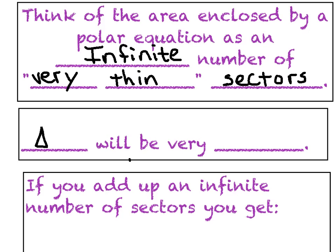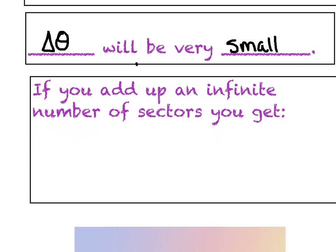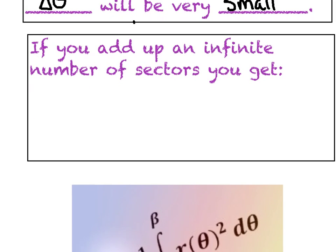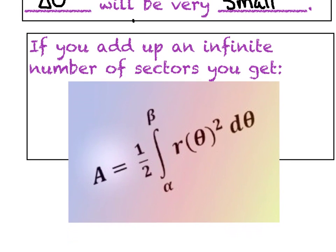Generally speaking, think of the area enclosed by a polar equation as an infinite number of very, very, very thin sectors or pizza slices or wedges. The key here is that delta theta or the change in theta will be very, very small - infinitely small. If we think of adding up an infinite number of really thin sectors, we're going to get this formula. Notice instead of just r squared, we wrote r of theta squared. It's kind of like saying f of x, but in terms of our new variables.